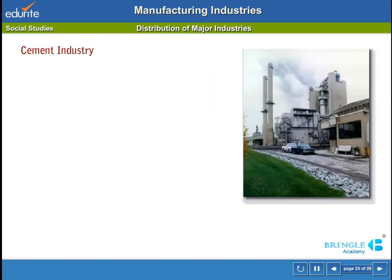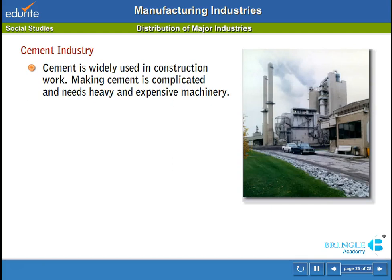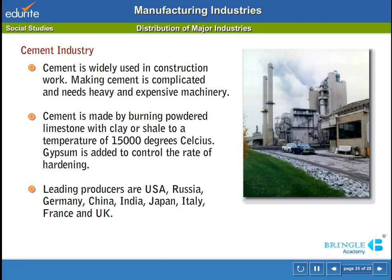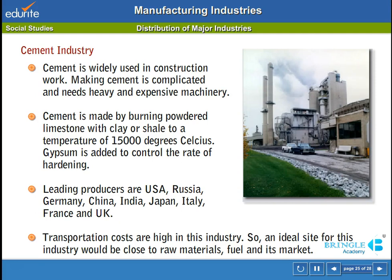Cement industry: cement is widely used in construction work. Making cement is complicated and needs heavy and expensive machinery. Cement is made by burning powdered limestone with clay or shale to a temperature of 15,000 degrees Celsius; gypsum is added to control the rate of hardening. Leading producers are USA, Russia, Germany, China, India, Japan, Italy, France and UK. Transportation costs are high in this industry, so an ideal site would be close to raw materials, fuel and its market.